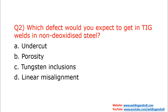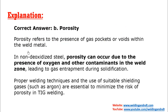Question number two: which defect would you expect to get in TIG welds in non-deoxidized steel? In non-deoxidized steel, the likelihood of getting porosity will be more. So the answer will be B, porosity. What happens in non-deoxidized steel is that the presence of oxygen can lead to the generation of porosity.